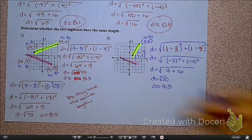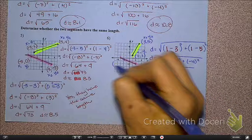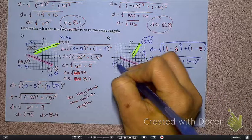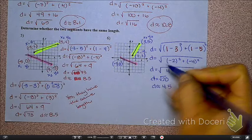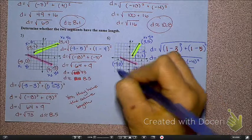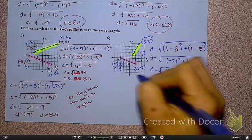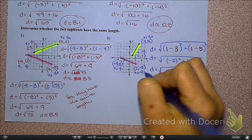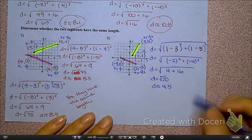So, I'm going to go ahead and label this ordered pair here, negative 3, 0, and this ordered pair here, 2, negative 2. I'm going to call this x1, y1, and this one x2, y2. But if you mixed up the order, that's okay.